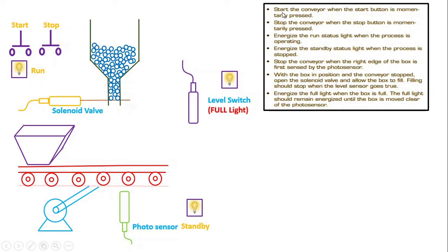They've given us: start the conveyor when the start button is momentarily pushed. So whenever a start button is pressed, the conveyor should start rotating — the motor should start running. And stop the conveyor whenever the stop button is momentarily pressed. At any point of time, if the stop button is pressed, the entire process should come to a halt: the motor should stop rotating, the conveyor should not move, and the entire process stops.